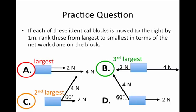The case of B is the third largest work because the four newton force is to the right and the two newton force is to the left and so there's a net force of two newtons to the right and the net work then would be two newtons times one meter.